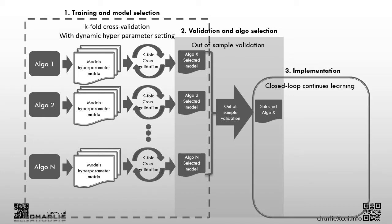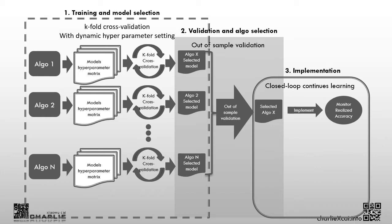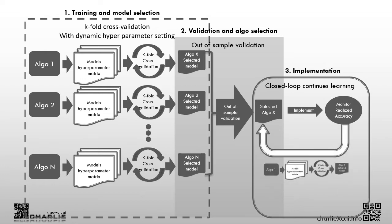In the stage three implementation, we monitor the performance constantly. When the model performance drops to a level lower than a preset threshold — for example, in this paper when the error rate is higher than 42.5 percent — a retraining is triggered, taking it back through the same approach as in the training and model selection stage, going through hyperparameter selection and cross-validation to find a better model. This is also applied to a new set of data rather than the beginning set.